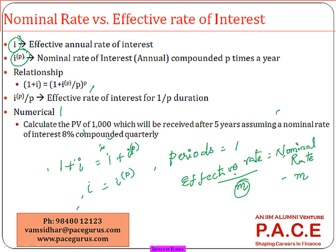The problem arises when compounding happens non-annually, because most quotations are based on the nominal rate. For example, if someone says eight percent per annum compounded quarterly or compounded monthly, the eight percent is not the effective annual rate — it is a nominal annual rate compounded quarterly. In that case I can take the quarterly rate.